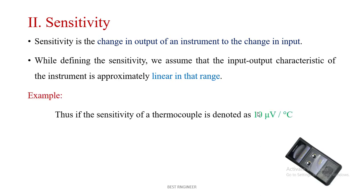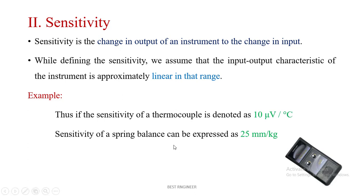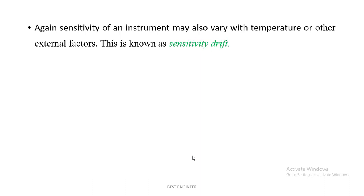For example, if the sensitivity of a thermocouple is defined as 10 µV per degree Celsius, then for every degree Celsius there is a change of 10 µV. The sensitivity of a spring balance can be expressed as 25 mm per kilogram — meaning while adding 1 kg on the spring balance, there is a compression of 25 mm. Sensitivity of an instrument may also vary with temperature or other factors.